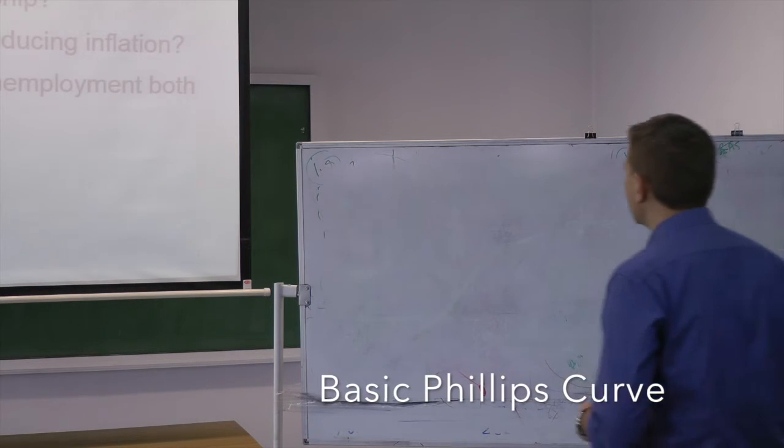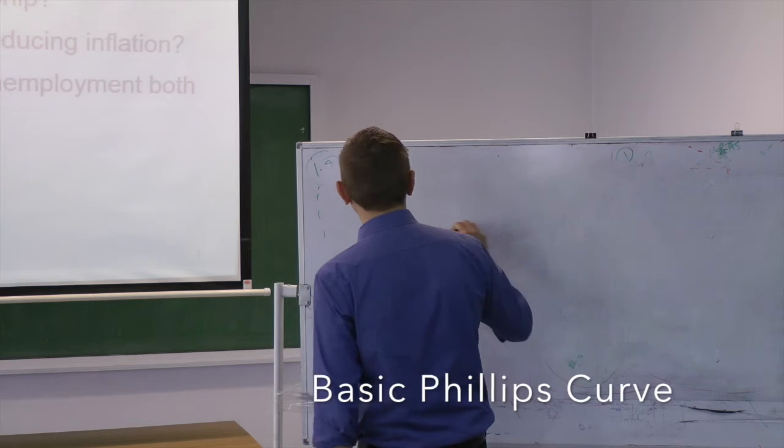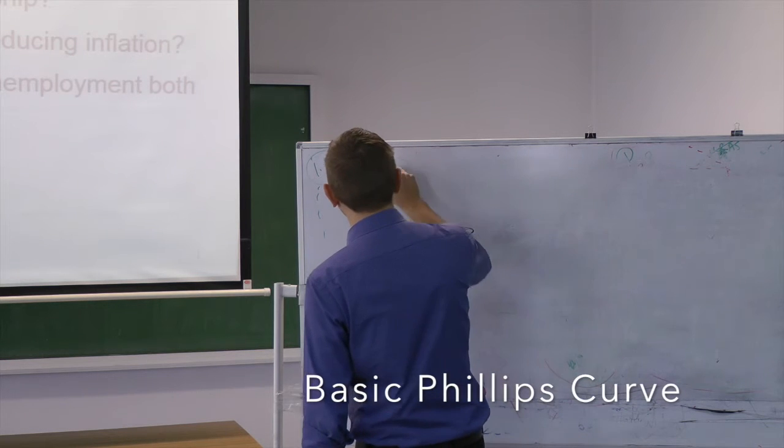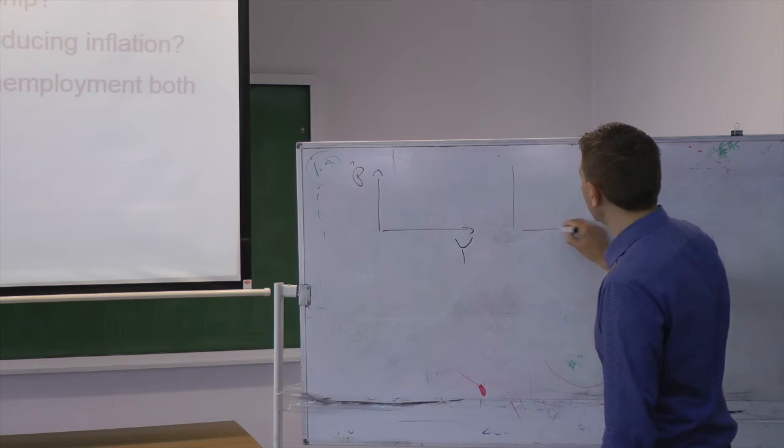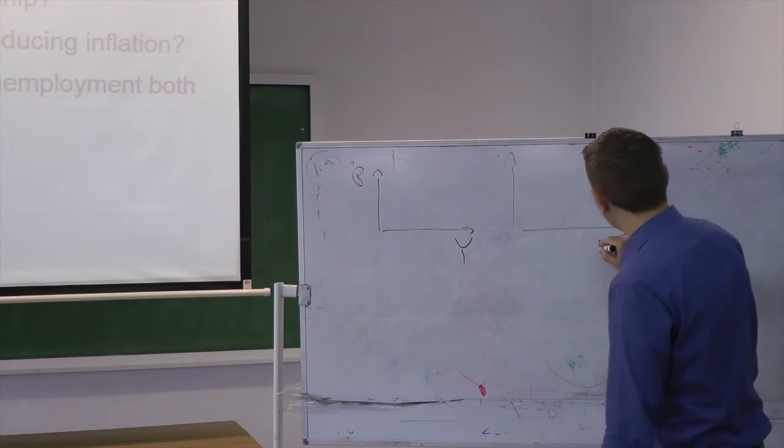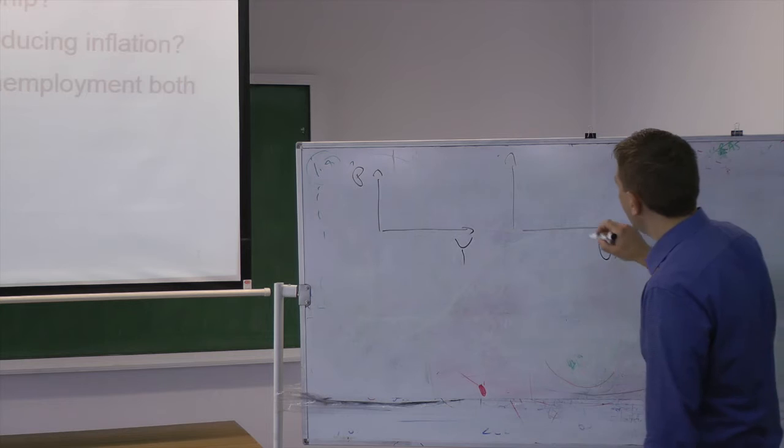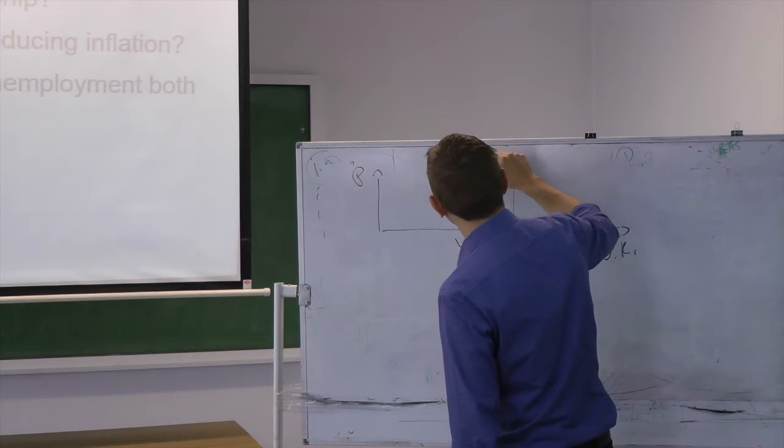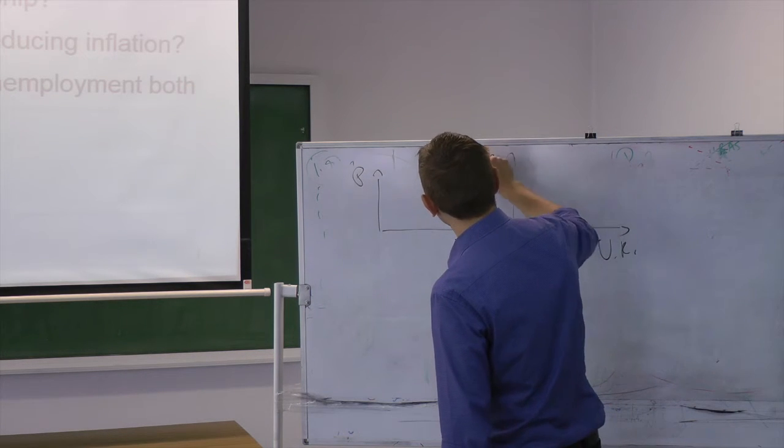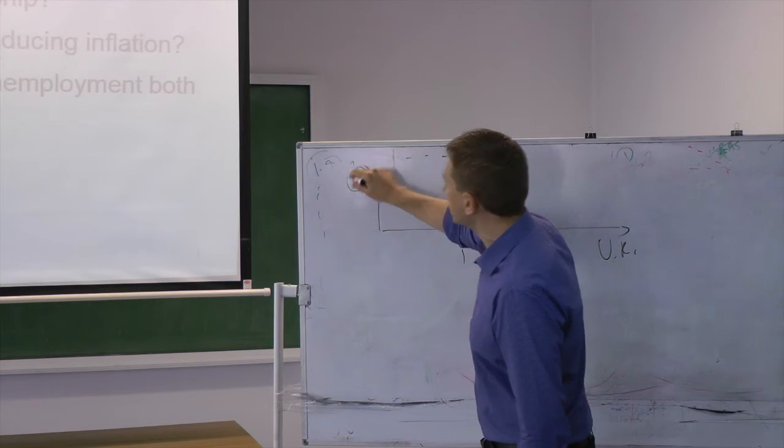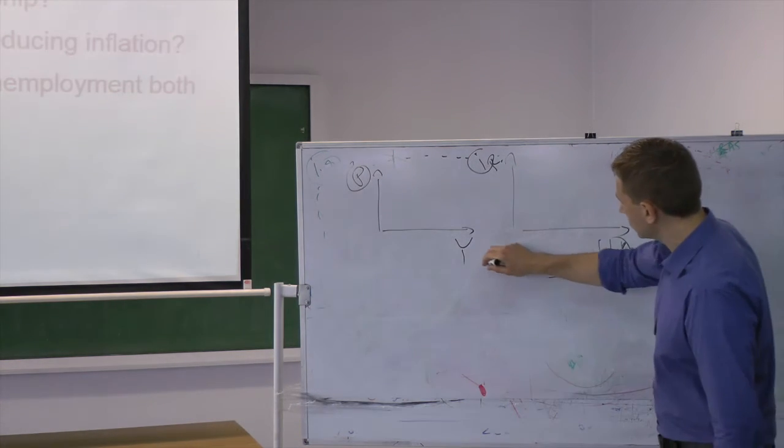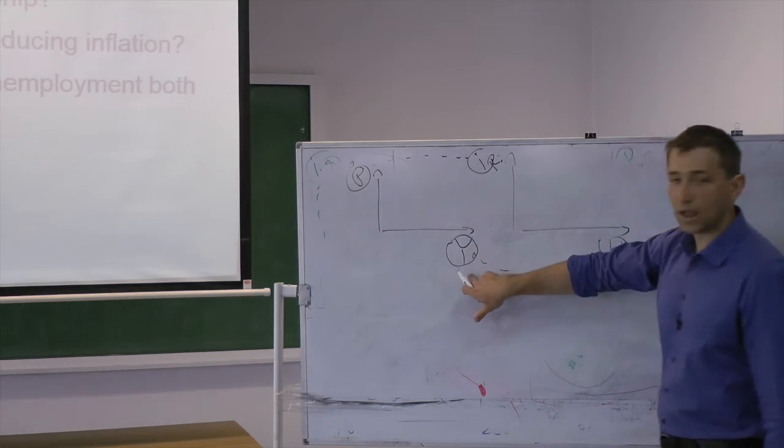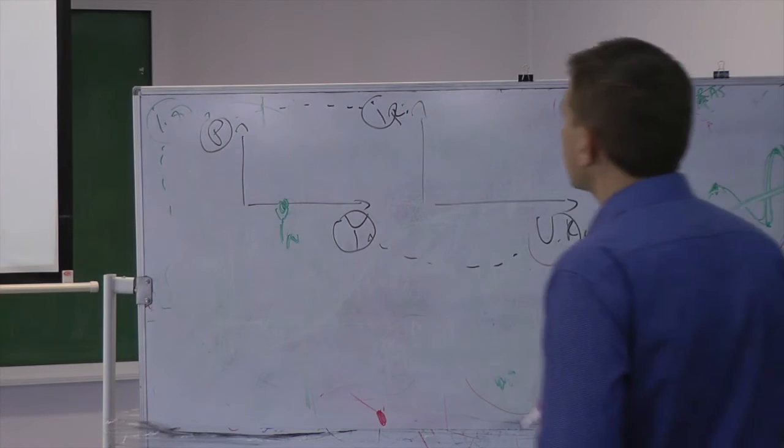So now what we learned so far is that there is a relationship between output and price level. Now we're going to learn that there is a relationship between unemployment rate and inflation rate. Inflation rate is of course connected with the price level, and unemployment is connected to the output.